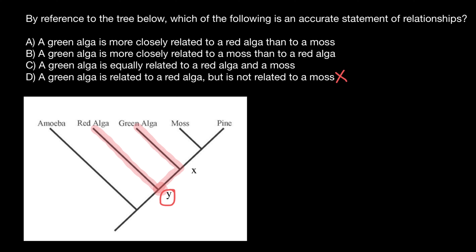And now take a look at how much time has passed between moss and green alga. The most recent common ancestor was at this point — we say it is specified by the letter X. Let's compare the length of the lines; we can also join them by these lines. And now you see that these three lines are much shorter than these three lines. That means that green alga and moss are much more closely related than green alga and red alga.